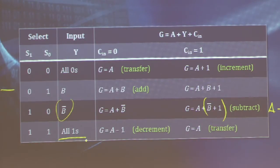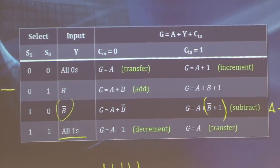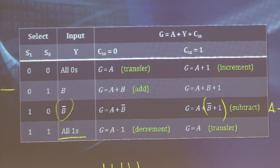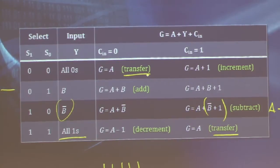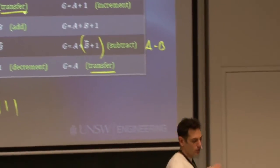The last option is to have Y being all 1's. So ignore B altogether, set all the inputs together as all 1's. A binary number that is all 1's in 2's complement is the number minus 1. No matter how many 1's you put, this will always evaluate to decimal minus 1. And this will then give us, if there's no carry-in, A plus minus 1 is A minus 1. So we have a decrement on A. Or if we had a carry-in of 1, essentially we're having A minus 1 plus 1, which is just another transfer of A. So we do get this transfer function twice.